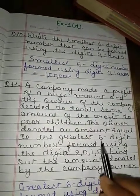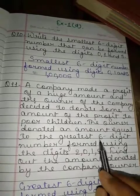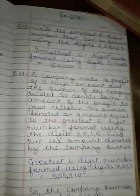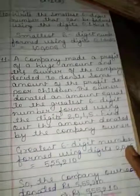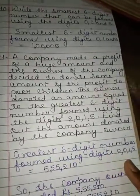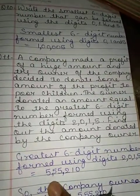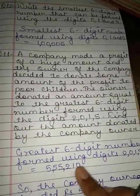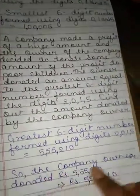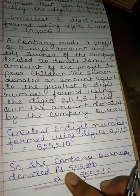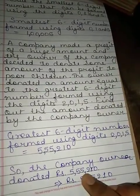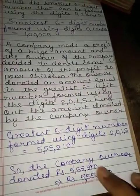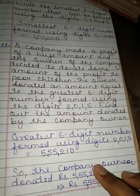What will the greatest 6-digit number become using 2, 0, 1, 5? The greatest 6-digit number formed using digits 2, 0, 1, 5 will be 5,55,210. So the company owner donated rupees 5,55,210. Itne rupees unhone donate kiye poor children ko.